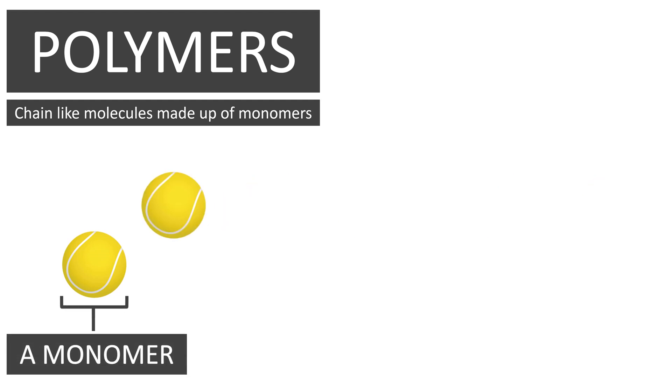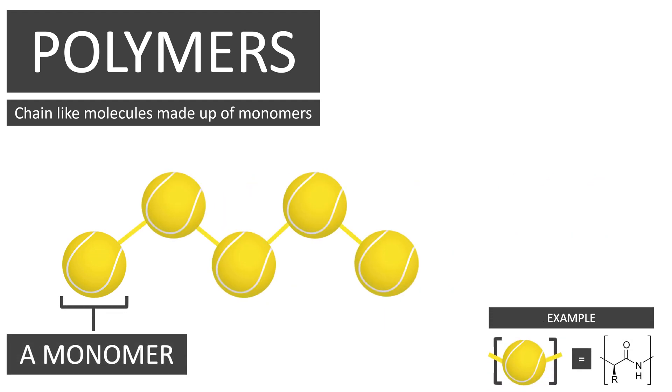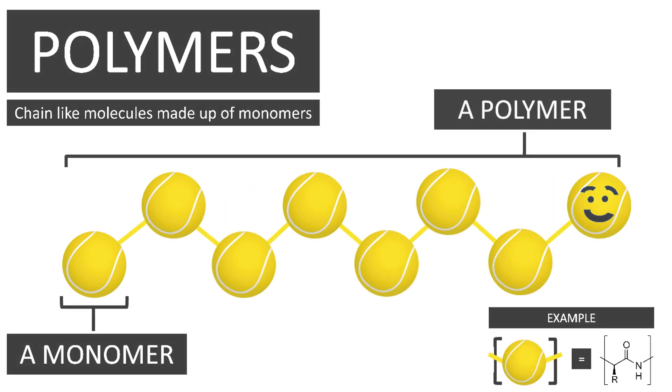What are polymers? A polymer is a very large, chain-like molecule which consists of many smaller molecules called monomers, like each of these tennis balls.